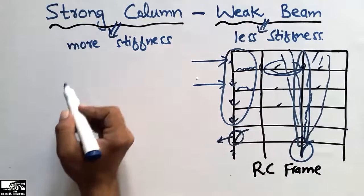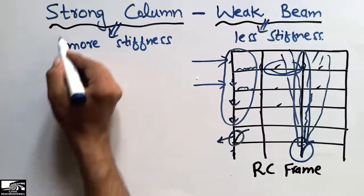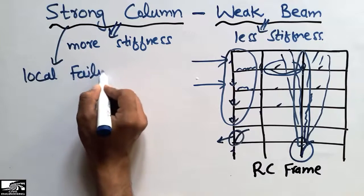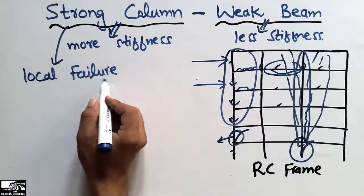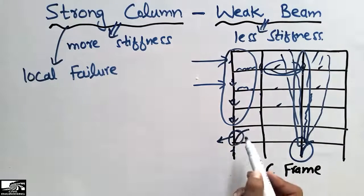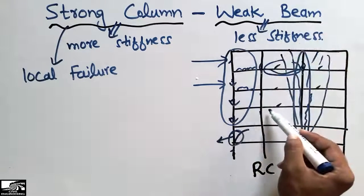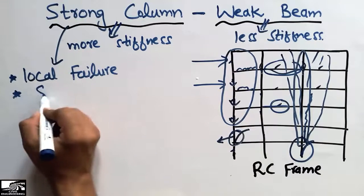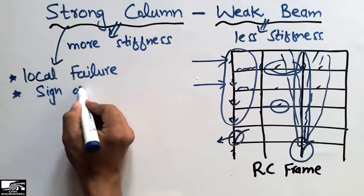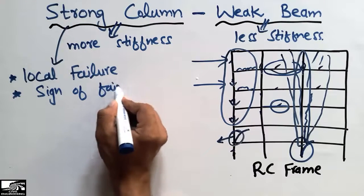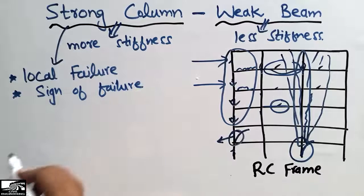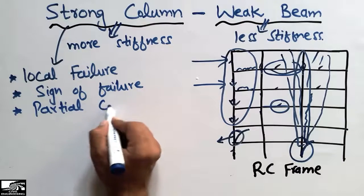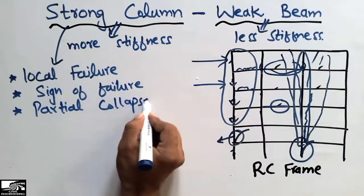The strong column and weak beam help produce only local failure of the structure. Local failure means only one structural member will fail. If your beam fails, only that beam will collapse — local failure — and it gives us a sign of failure. We can see the partial collapse and identify that only beams are going to collapse.